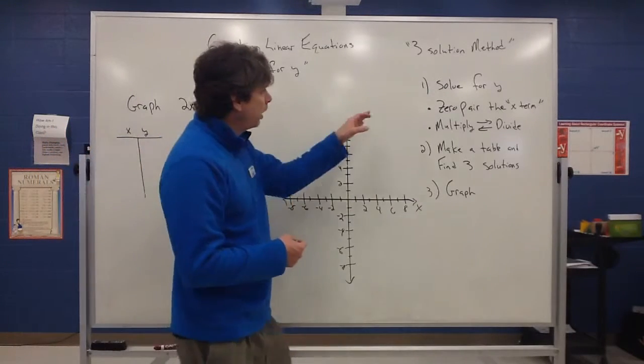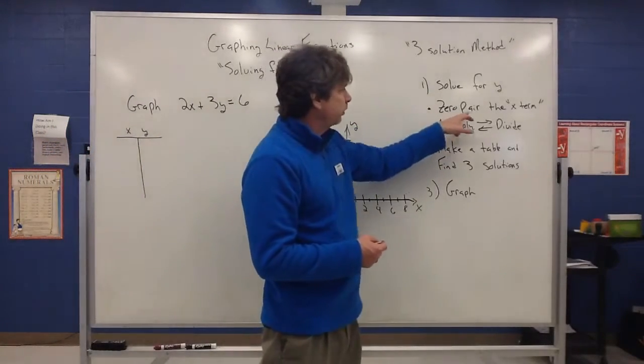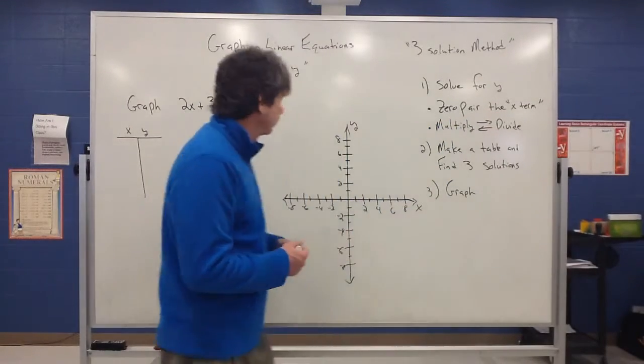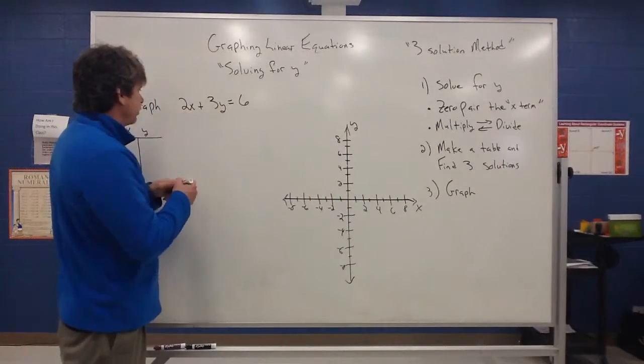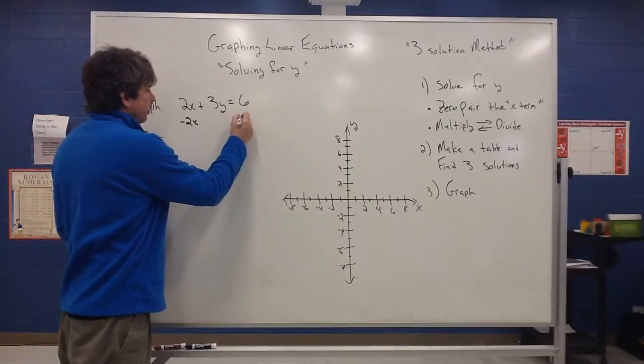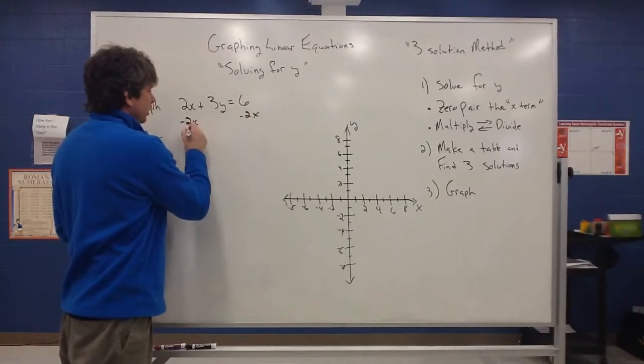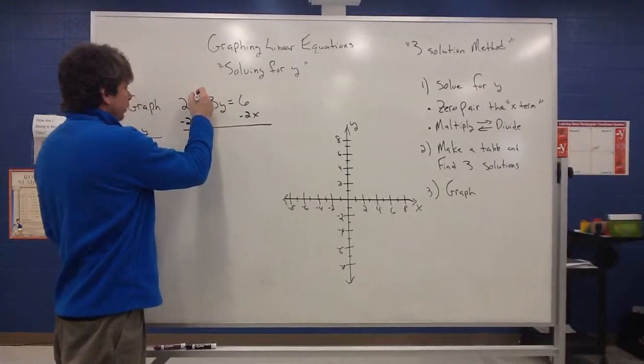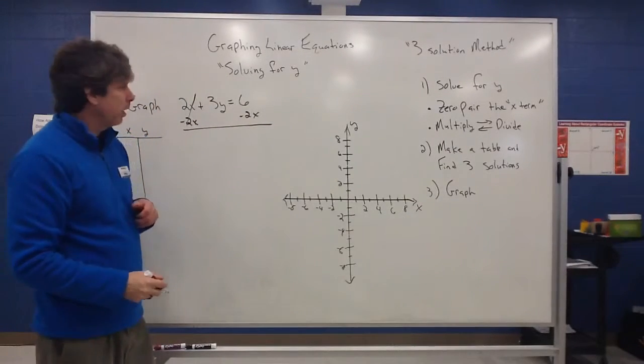So again, to solve for y, we basically want to use what we call the zero pair on the x term. So to get the y by itself, we go after the x term first and we want to use the negative 2x to zero it out. I have to use the negative 2x over there on the other side of the equation to keep it balanced.